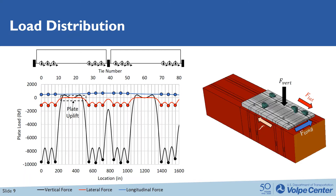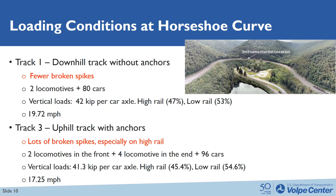After we obtain the plate load, we can incorporate it back into the finite element model. Using the vertical force and the lateral force, we are able to calculate the friction force between the plate and the tie, and then get the spike load distributed within the plate. We used these two models to understand the loading conditions at the Horseshoe Curve in Pennsylvania. The Horseshoe Curve has very tight degree curvature with steep grade. There are two tracks: Track 1, the downhill track without anchors, where fewer broken spikes were found; and Track 3, the uphill track with anchors, where lots of broken spikes — especially on the high rail side — were found.